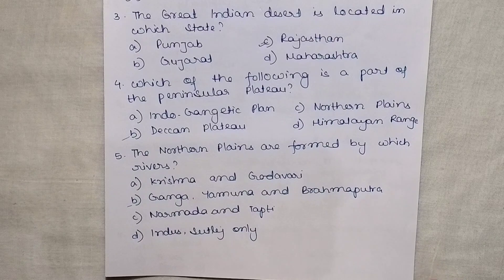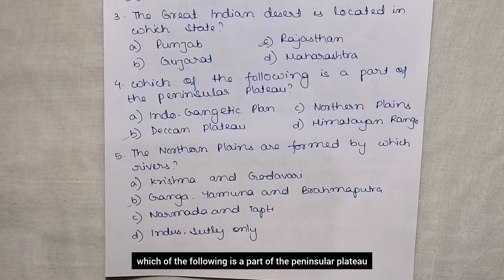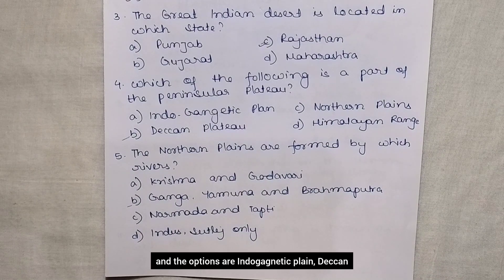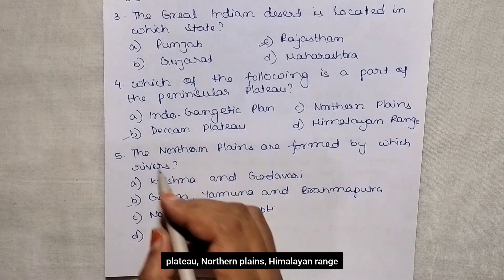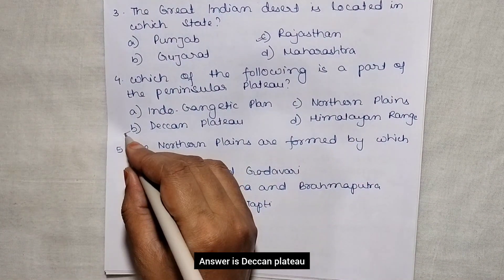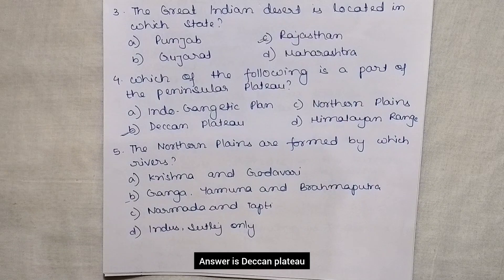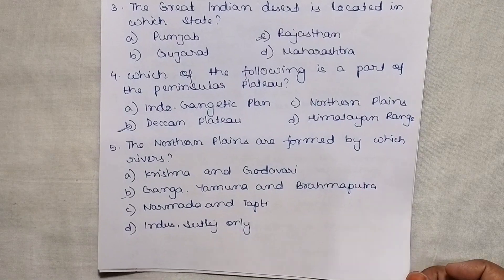Which of the following is a part of the peninsular plateau? The options are Indo-Gangetic Plain, Deccan Plateau, Northern Plains, and Himalayan Range. Answer is Deccan Plateau.